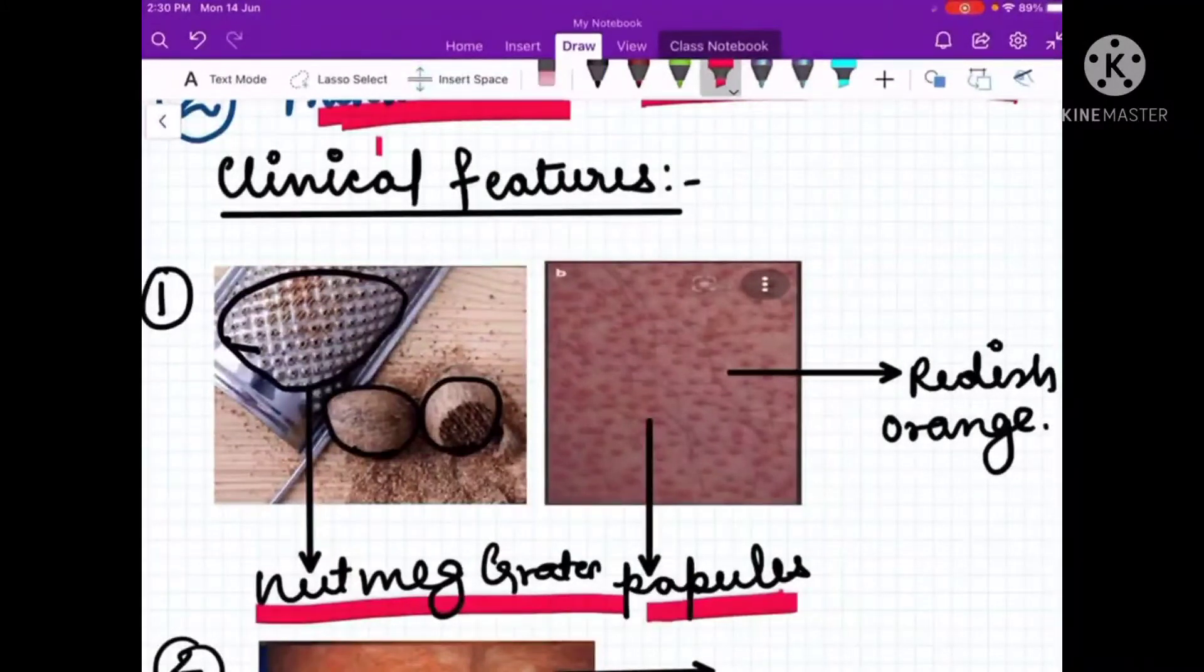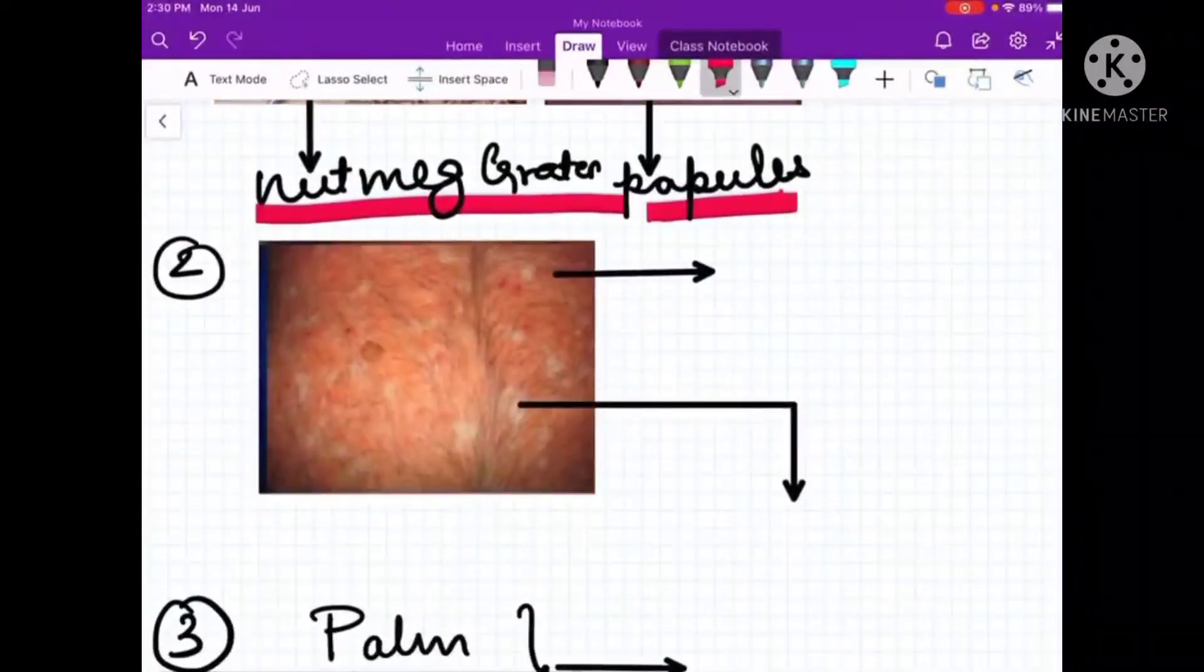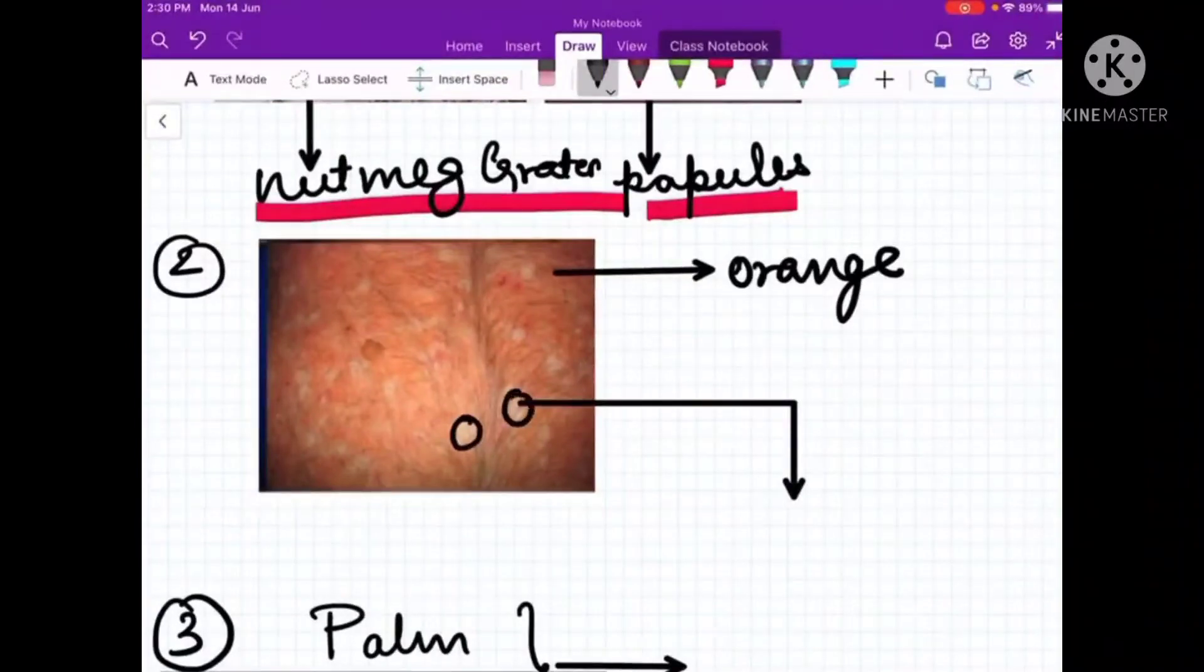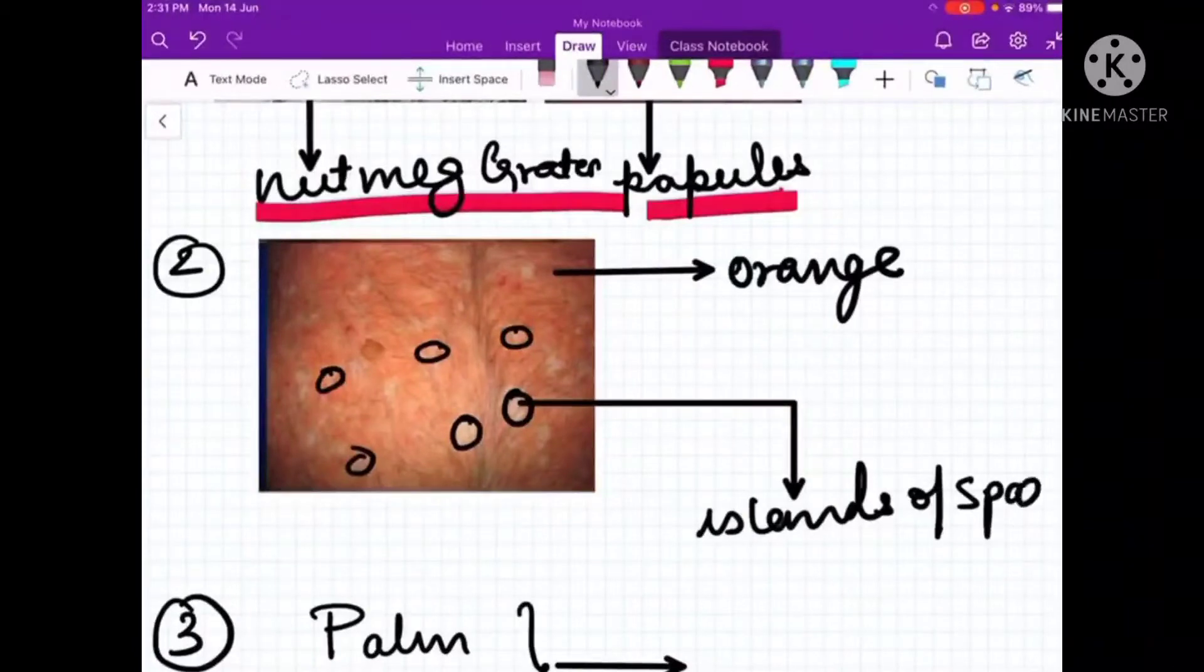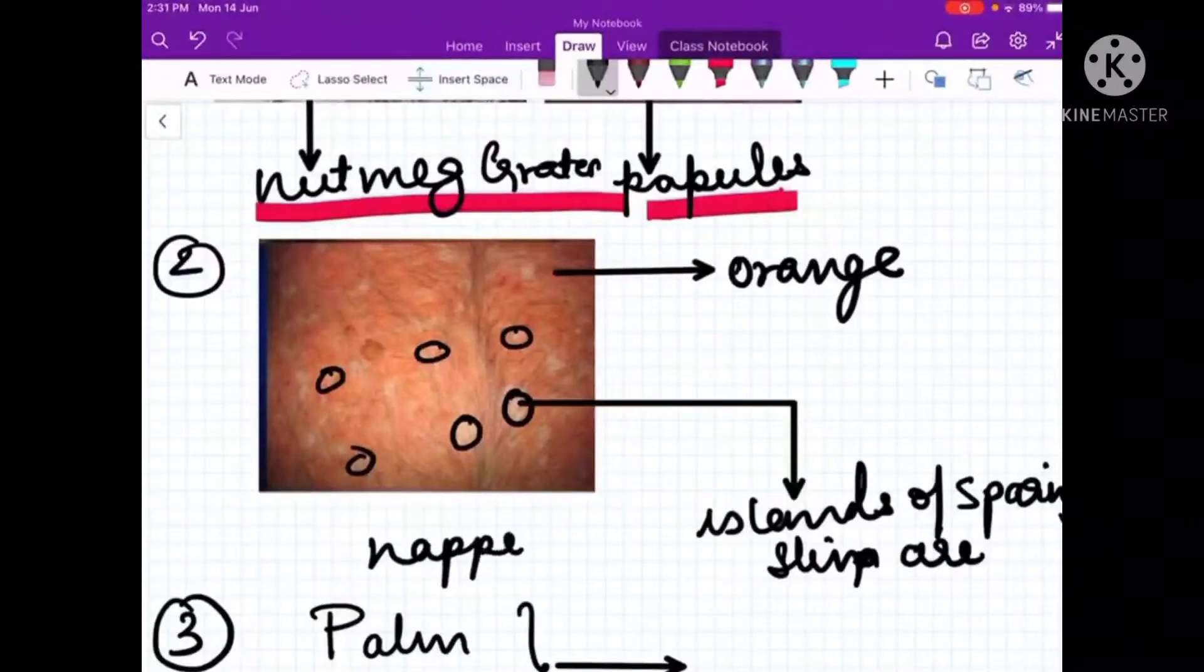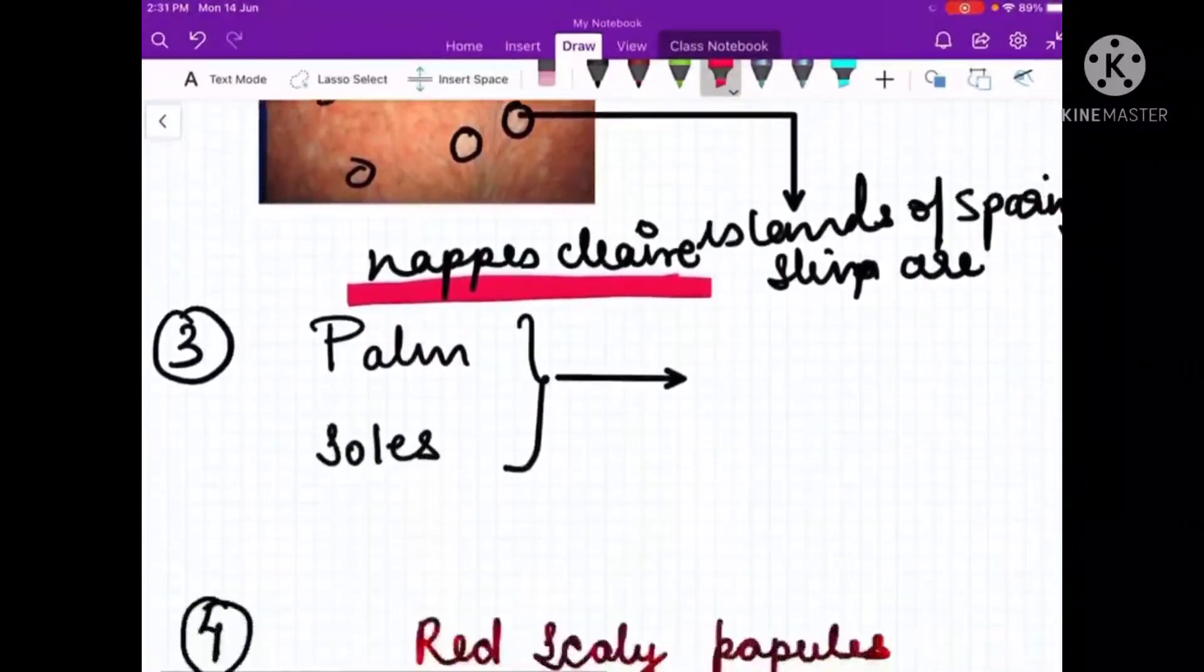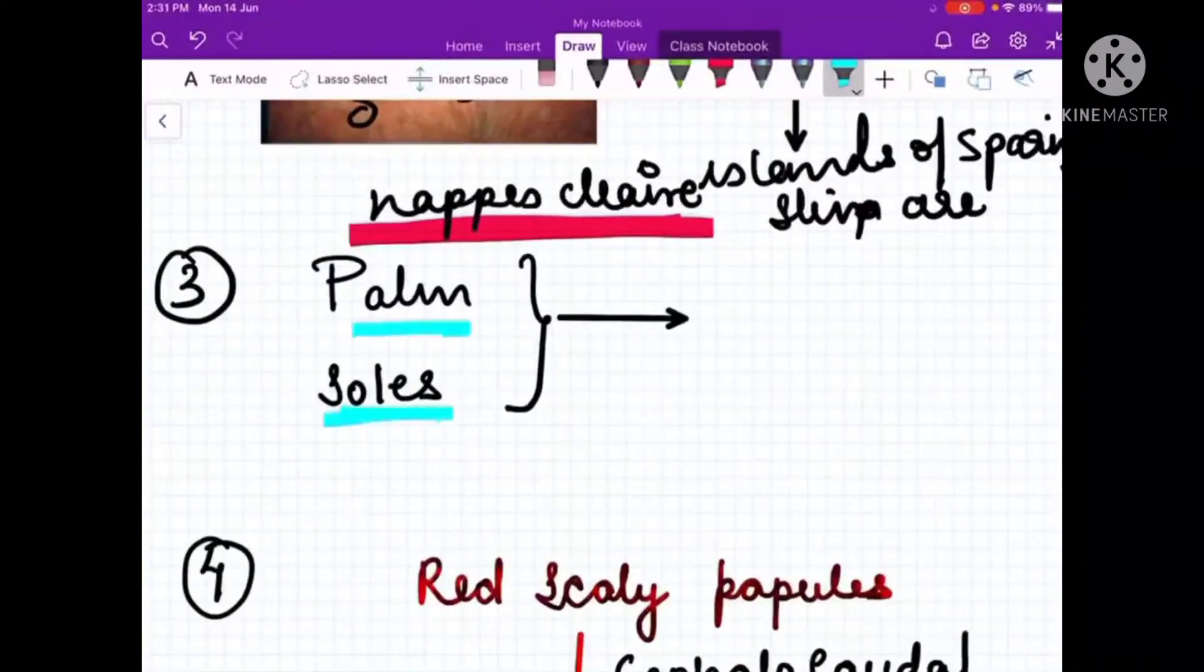Second, what we see here is the classical orange color. And what we see here are these normal skin areas. These are called islands of sparing. These skip areas are classically called as nappes claires.